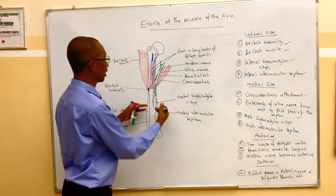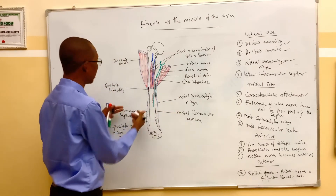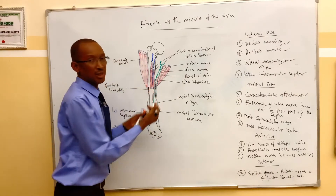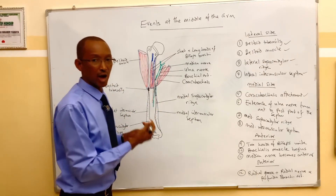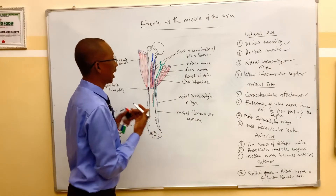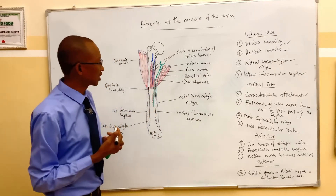So the medial intermuscular septum together with the lateral intermuscular septum — the two together — now divide the arm into the anterior compartment and the posterior compartment.